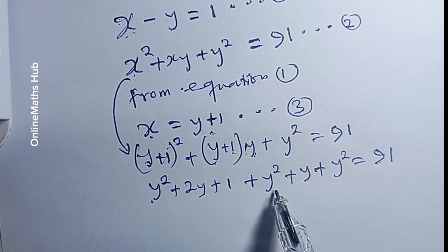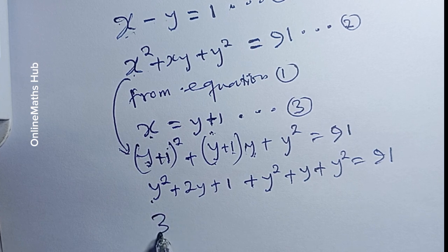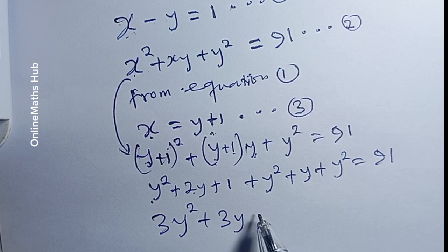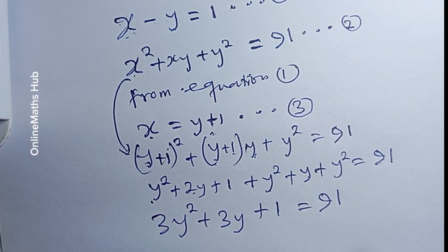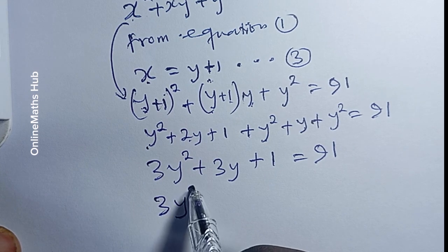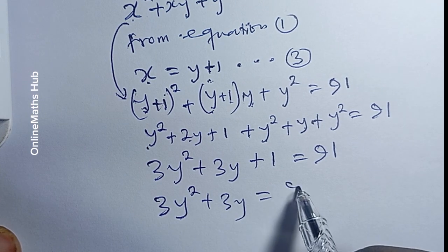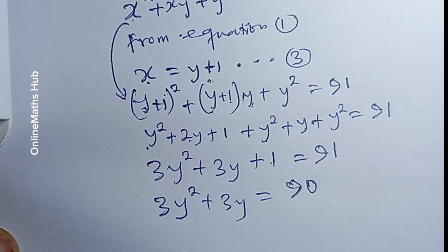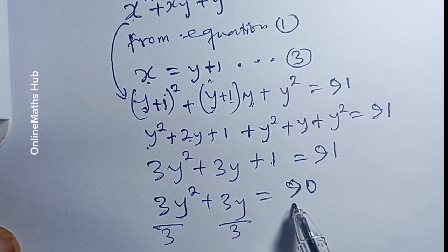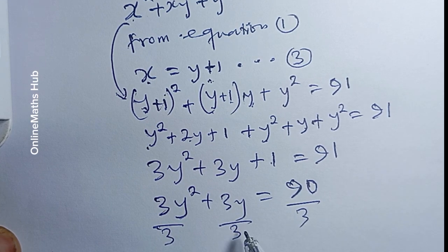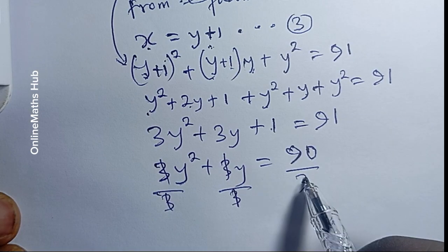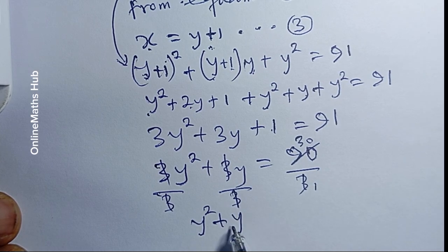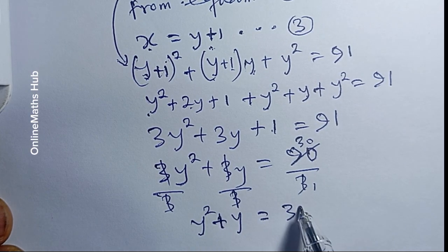Simplifying, combining the three y² terms gives 3y², and 2y plus y gives 3y, plus 1 equals 91. So 3y² plus 3y equals 90. Dividing through by 3 gives y² plus y equals 30.